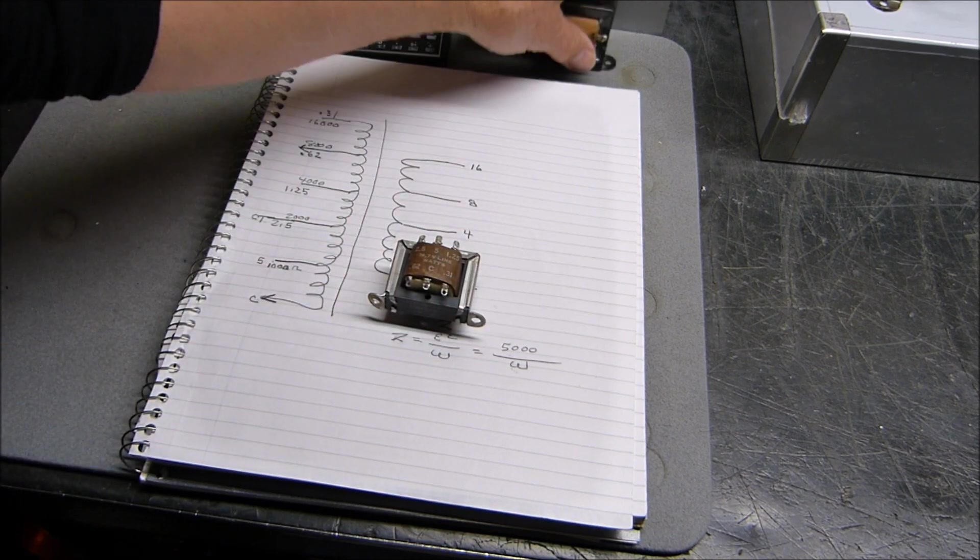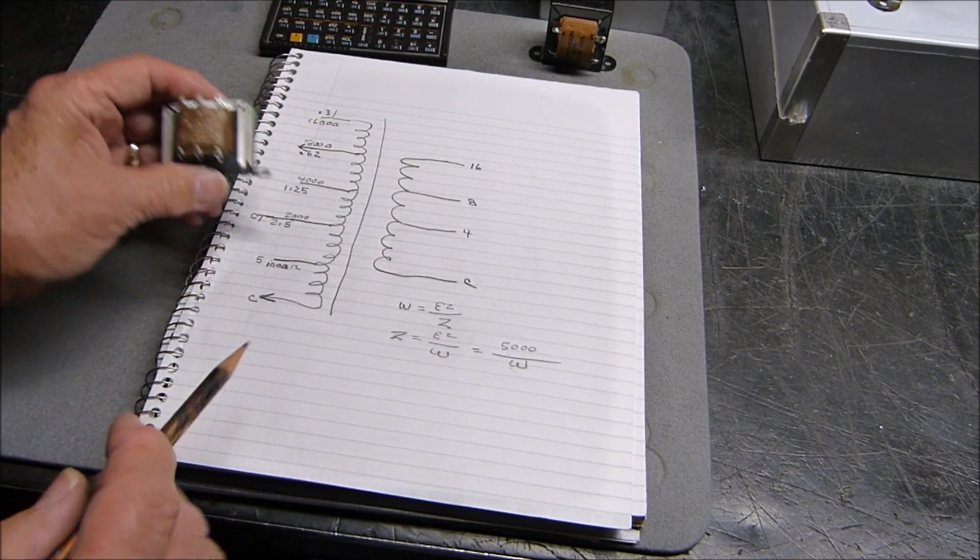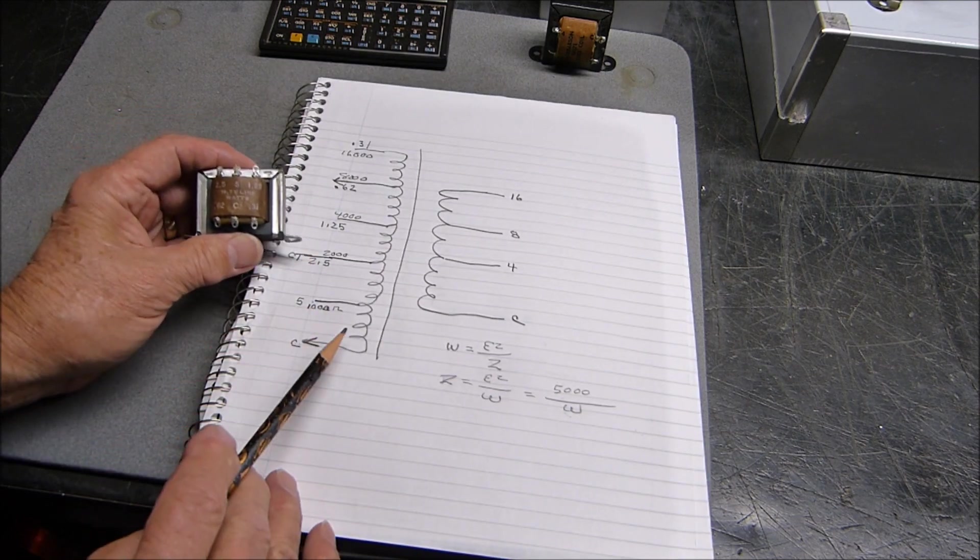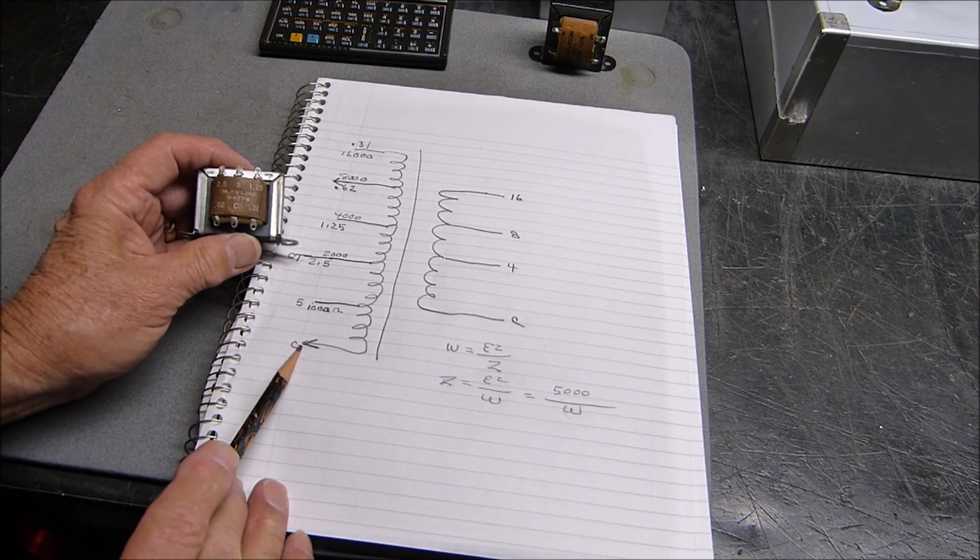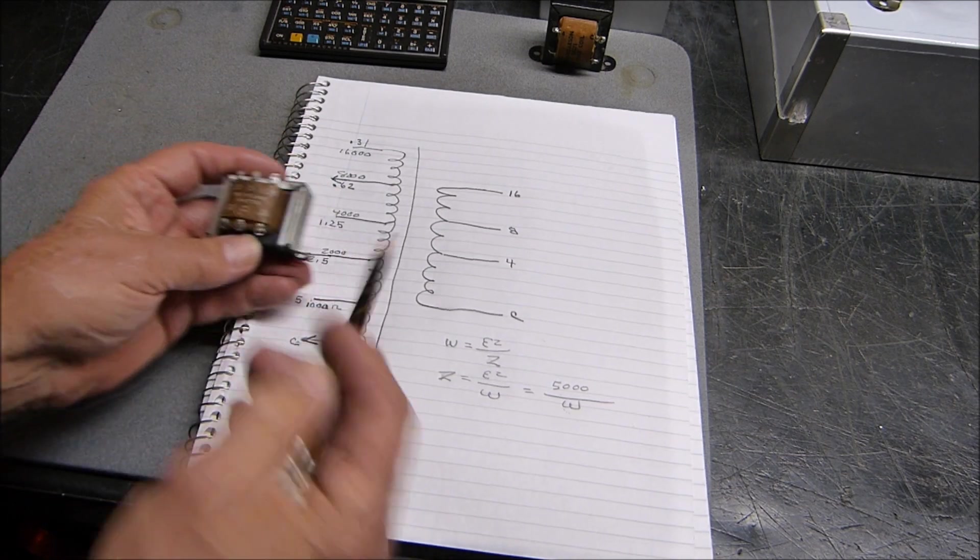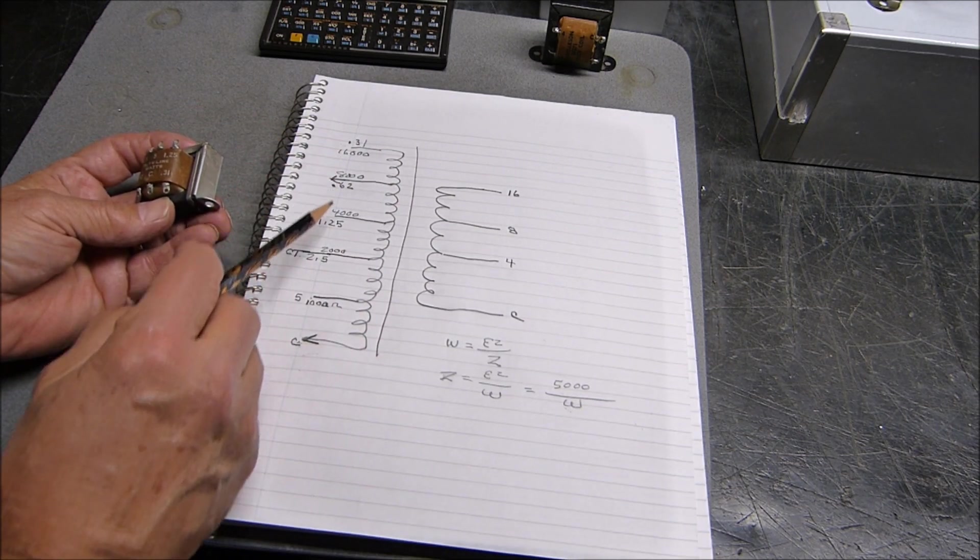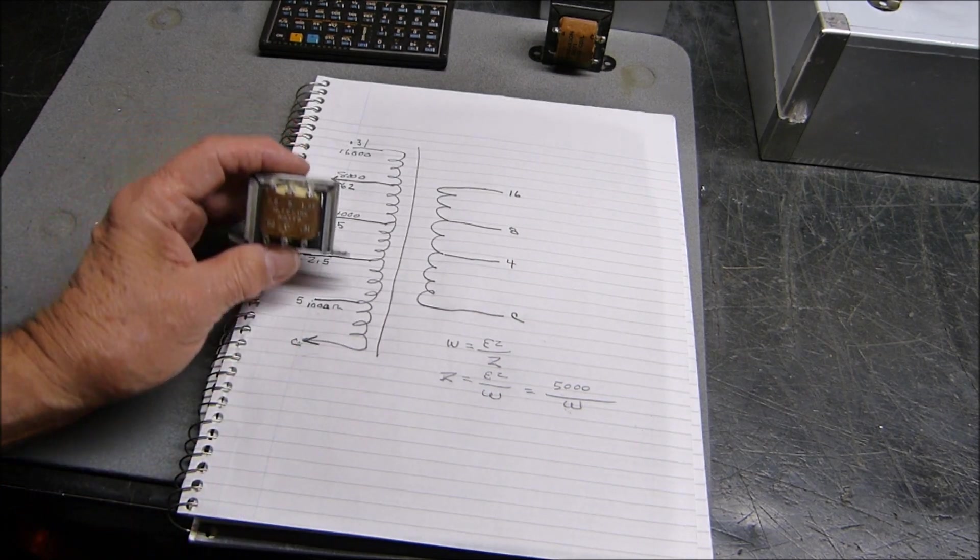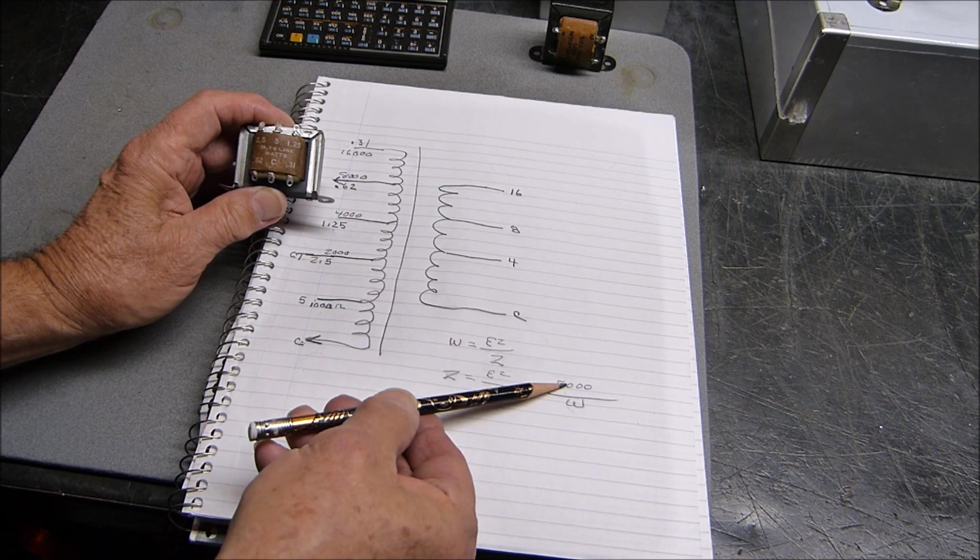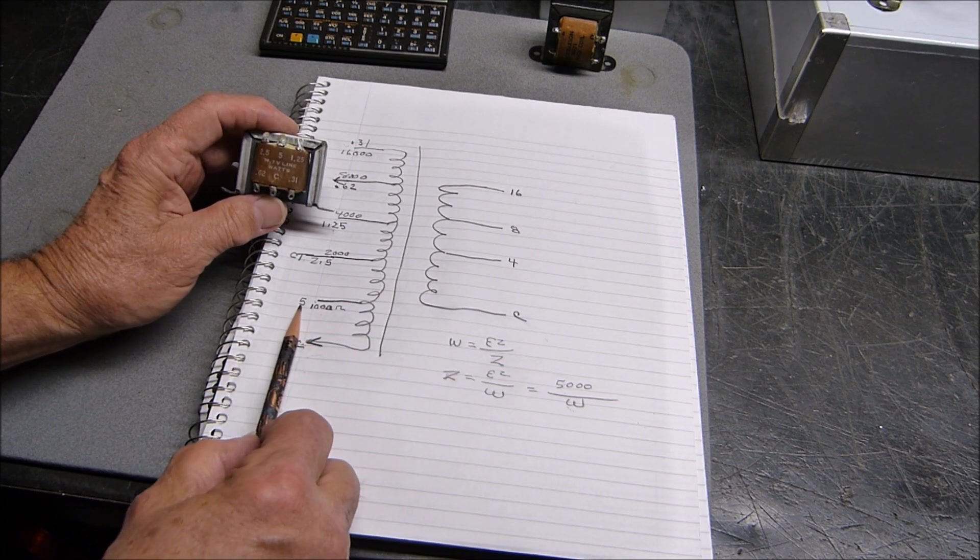What you do is you draw your transformer out, draw a schematic of it. C is common, and the lowest power is the winding at the top, and every other one is a tap. All we have to do is start dividing 5,000 by the watts.